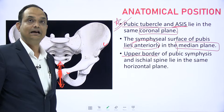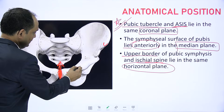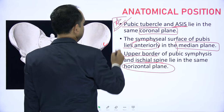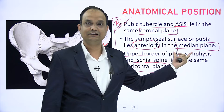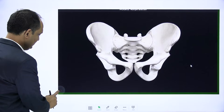The third condition is that the upper border of the pubic symphysis and the ischial spine should lie in the same horizontal plane. The ischial spine is on the posterior border of your hip bone. So when you are having the anatomical position, these are the three important points: ASIS and pubic tubercle in one coronal plane, the pubic symphysial surface in the median plane, and the superior border of the symphysial surface and ischial spine in the same horizontal plane.